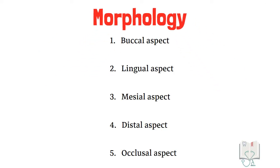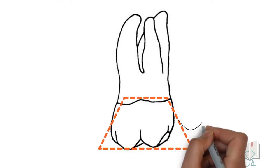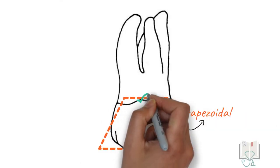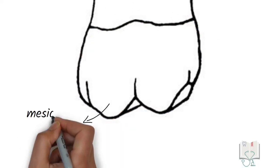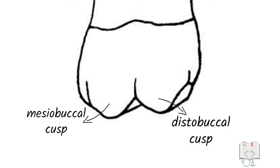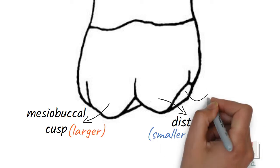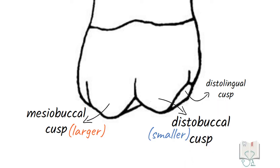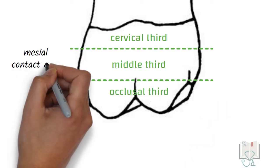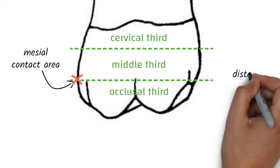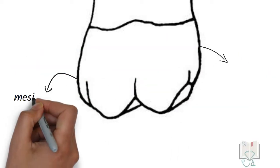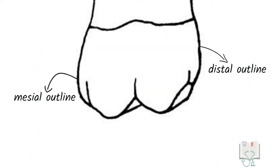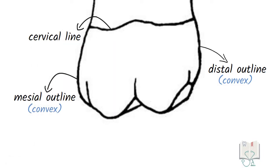The morphology of a tooth is studied under five aspects. Starting with the buccal aspect: the outline form of the crown is trapezoidal with the shorter side towards the cervix and longer side towards the cusps. Both buccal cusps — mesiobuccal and distobuccal — are seen, with the mesiobuccal cusp being larger. Part of the distolingual cusp is also visible. The mesial contact area is at the junction of the occlusal third and middle third, whereas the distal contact area is at the middle third. Both mesial and distal outlines are convex, however the cervical line is irregular.